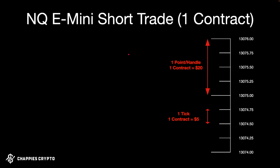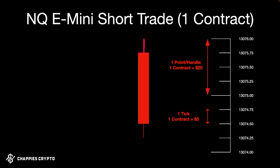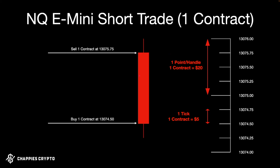A short means rather than buying something, you're going to sell something first — which is really confusing for people new to this space. There's plenty of material on the internet explaining short trading. In this context, the candle is typically red as price moves down. The price opened at a level, moved up a tick, then went right down to the bottom of the range and closed at that lower level.